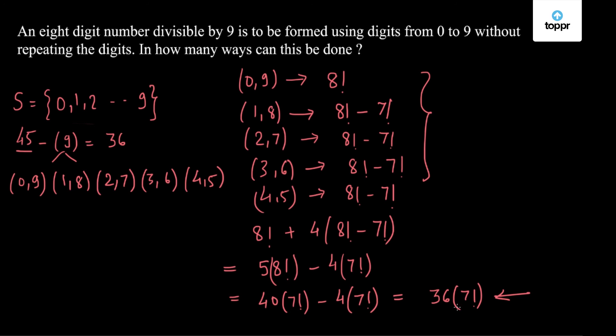So this is my answer to the question. There are 36 into 7 factorial. This is the simplest form in which we can express the answer to this question. 36 into 7 factorial.